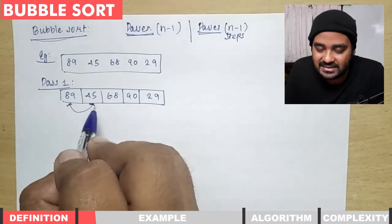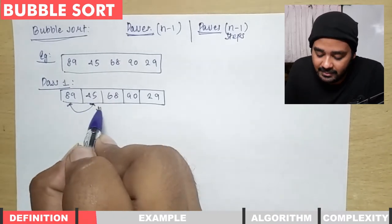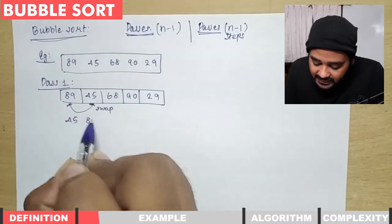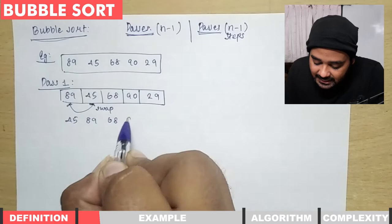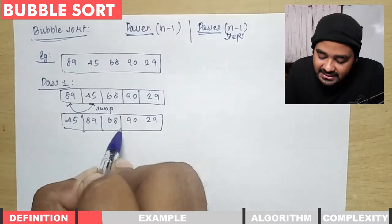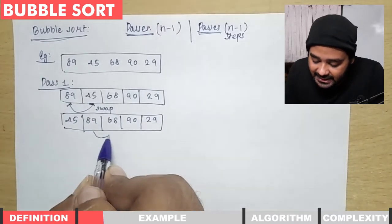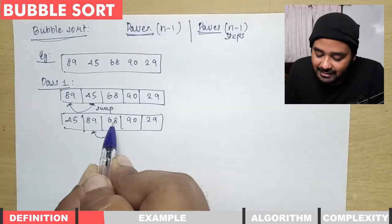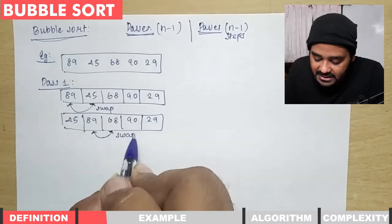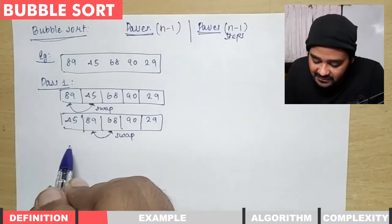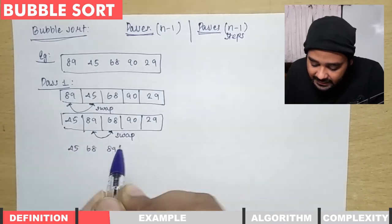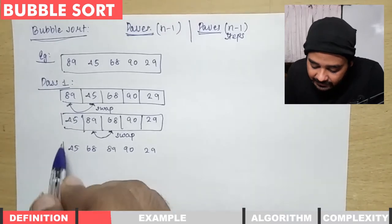Since they are not in order, we perform a swap. So 45 comes to the front, giving us: 45, 89, 68, 90, 29. Next, we compare 89 and 68 — again not in order, so we swap. After swapping we get: 45, 68, 89, 90, 29.